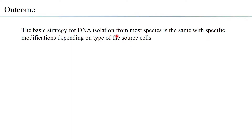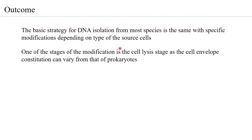For example, plant cells have a cell wall while animal cells do not have an outer envelope, and therefore the basic treatment is different. One of the stages requiring modification is the cell lysis stage itself, as the cell envelope constitution can vary from that of prokaryotes.